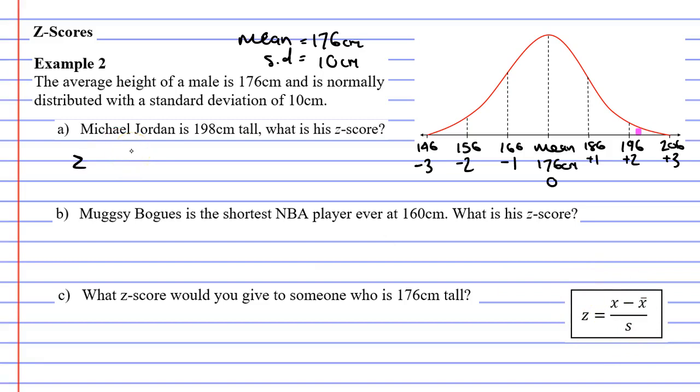Our formula is Z equals X, our score, minus X-bar, which is our mean, over s, which is our standard deviation. So our score, which is X, is basically how tall Michael Jordan is. He's 198 centimeters.